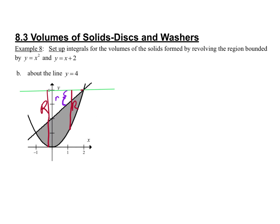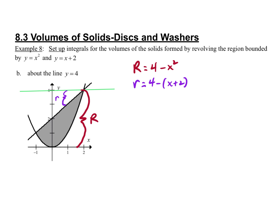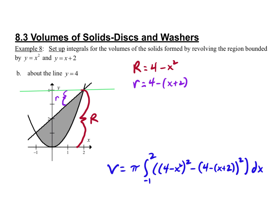So big R is 4 − x², and then the little r is 4 − (x + 2). Limits of integration are still negative one to two. Big R minus little r — watch your parentheses on this. Notice how many parentheses I had to add in here: I've got my big set of parentheses for this subtraction, but then multiple sets of parentheses inside. Just be careful of that, especially when you do eventually have to solve them on your calculator.